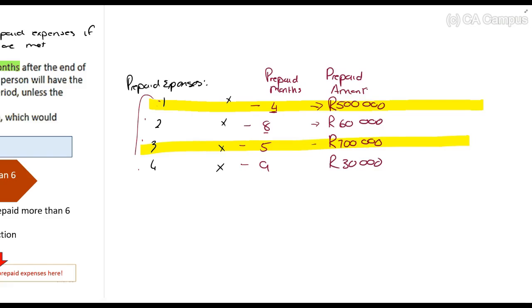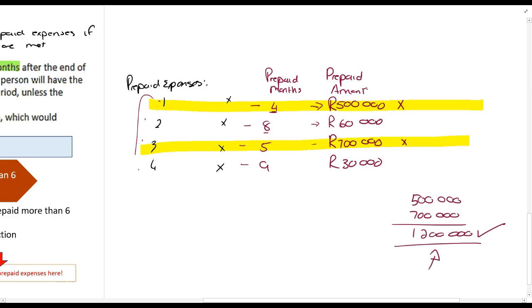Now those two amounts, the 500 and the 700,000, 1.2 million rands. Thus that amount may be allowed as a deduction. Can you see that's more than 100,000? Doesn't matter. We only look at the amounts of prepaid. Then after you've identified these ones which may be prepaid, you will exclude them from your calculation.